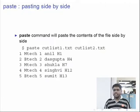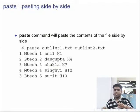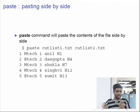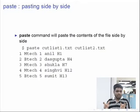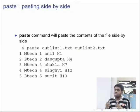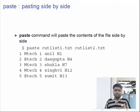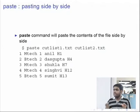Coming to another command called paste. Paste is like a vertical variant of the cat command. While cat concatenates two files sequentially (horizontally), paste outputs files side by side. When you type paste cutlist1.txt cutlist2.txt, you will see both files side by side. You can first cat each file to see their contents, then use paste to view the output side by side.